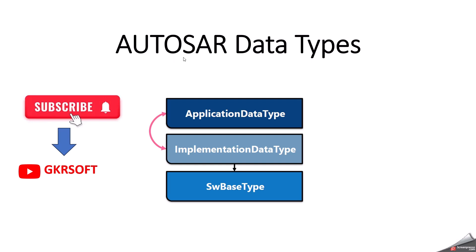We will first start with what is Autosar. Autosar is an Automotive Open System Architecture. It is a layered architecture — it has three layers: one is the application layer, another one is the RTE, and another one is the base software. Autosar architecture helps software developers design their software components for automotive applications and requirements.